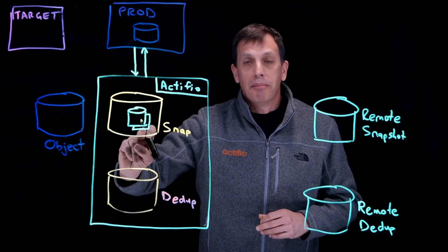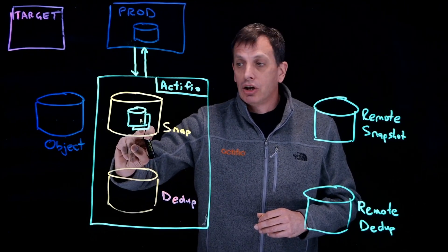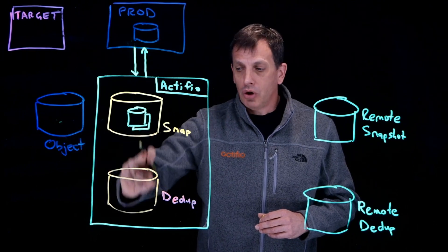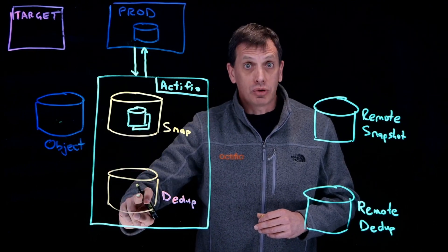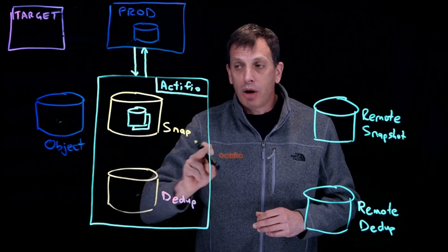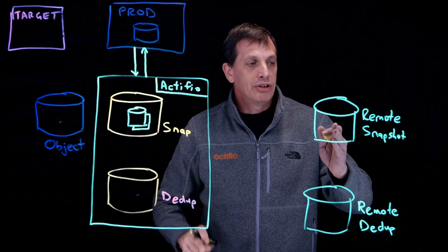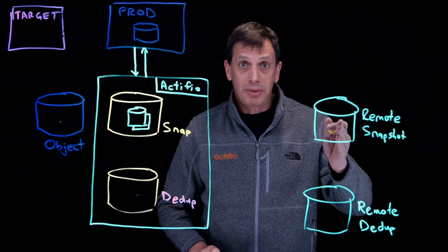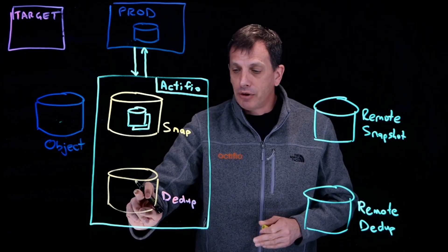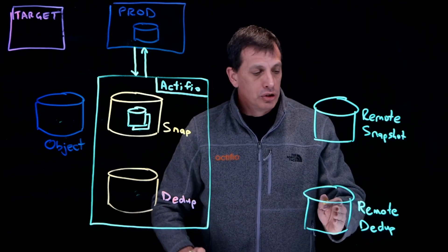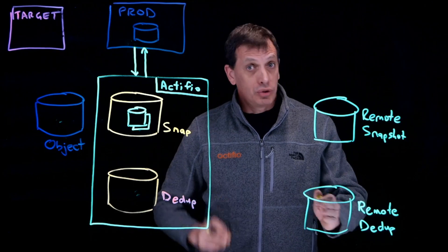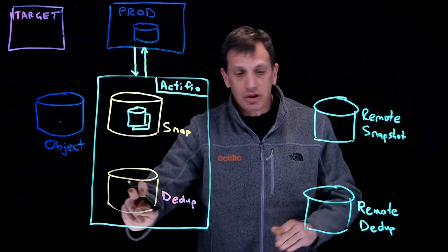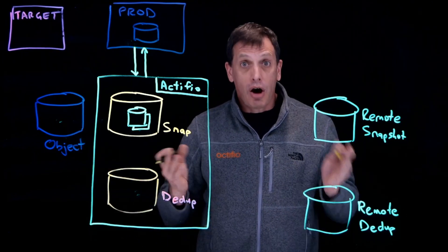We can then make a copy of this into object storage or into dedupe storage, and optionally we can also make a copy of it into a remote snapshot pool using dedupe ASync or stream snap, and from the dedupe pool to the remote dedupe pool using remote dedupe. All of these additional steps are optional.